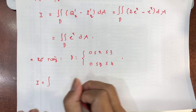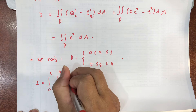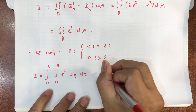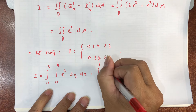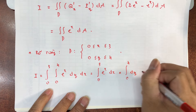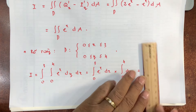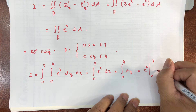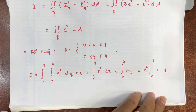Ráp cận vào: tích phân từ 0 đến 3, tích phân từ 0 tới 4, eˣ dy dx. Tách thành tích của hai tích phân xác định: [∫₀³ eˣ dx] × [∫₀⁴ dy]. Nguyên hàm của eˣ là eˣ; nguyên hàm của 1 là y.